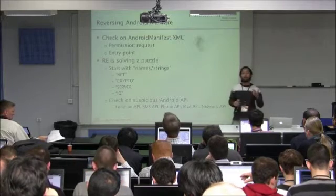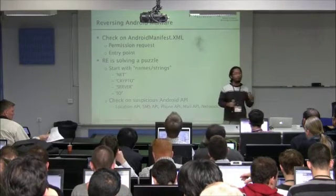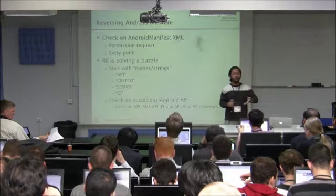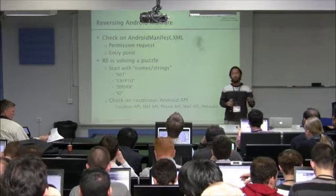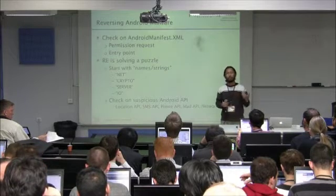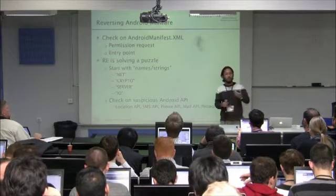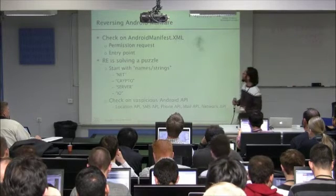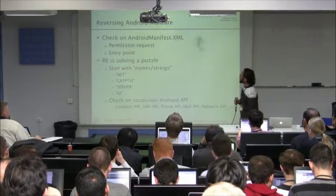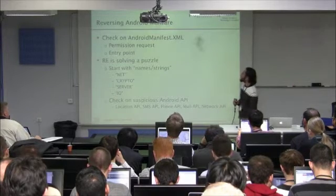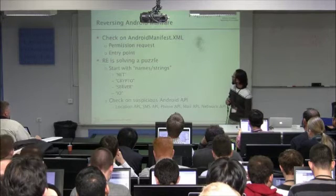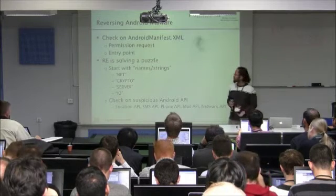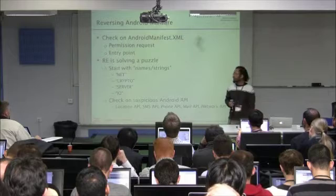The manifest also defines entry points — like when you click on an application, what is the function that's going to be triggered. It's like solving a puzzle. I normally start with names of strings.